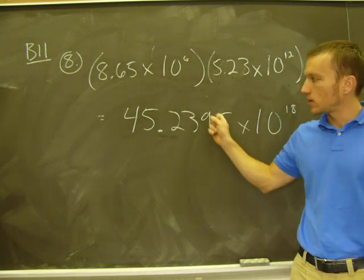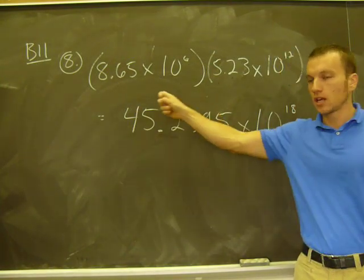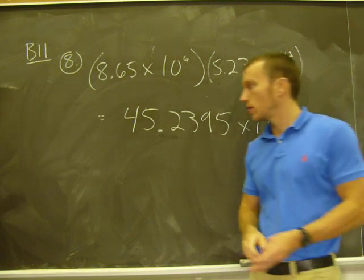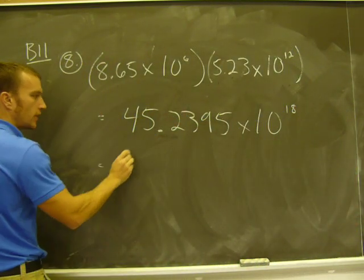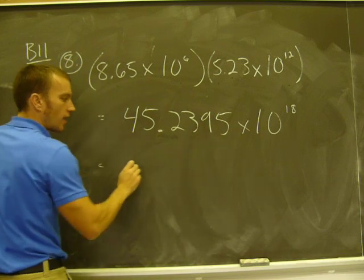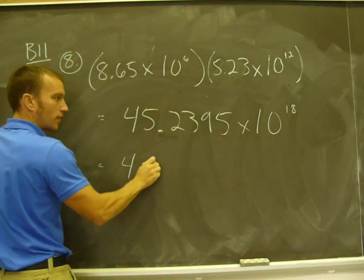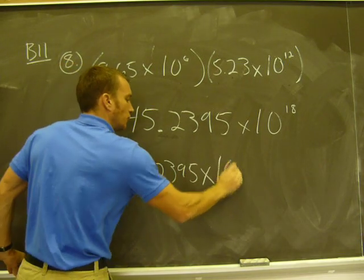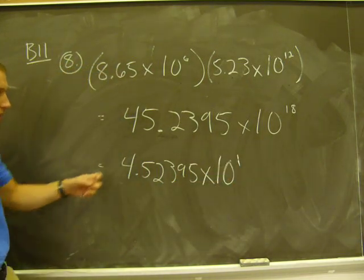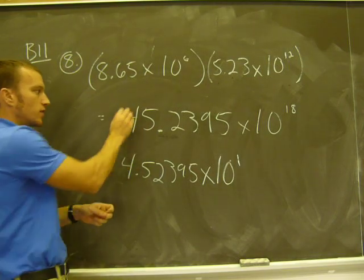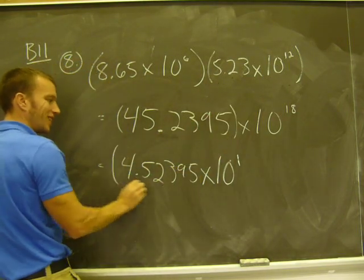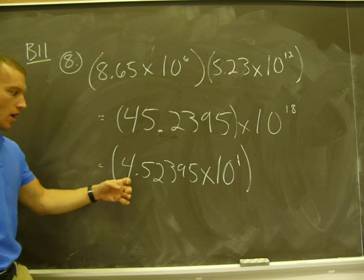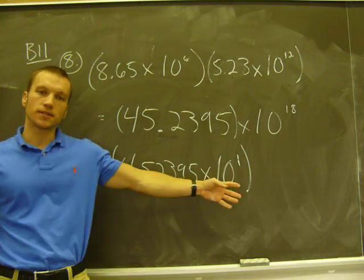So what I'm going to do is write just this guy in scientific notation and then multiply my powers of 10. So let me show you what I mean. 45.2395 is 4.52395 times 10 to the 1st. If I move this over here, then just this number is going to be, in scientific notation, 4.52395 times 10 to the 1st.